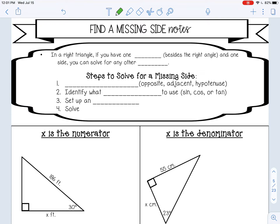In a right triangle, if you have one angle other than the right angle and one side, you can solve for any other side. You need one of the acute angles and one side length given to you.